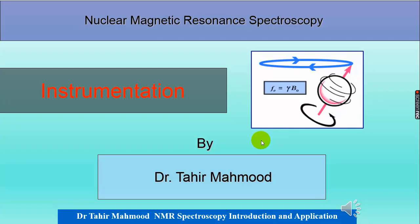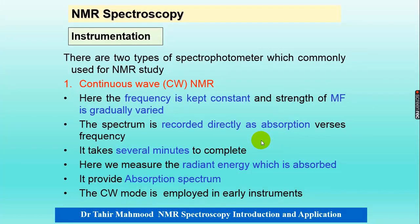In this lecture, I will explain the instrumentation of nuclear magnetic resonance spectroscopy. First, there are two types of spectrophotometer which are commonly used in NMR spectroscopy.